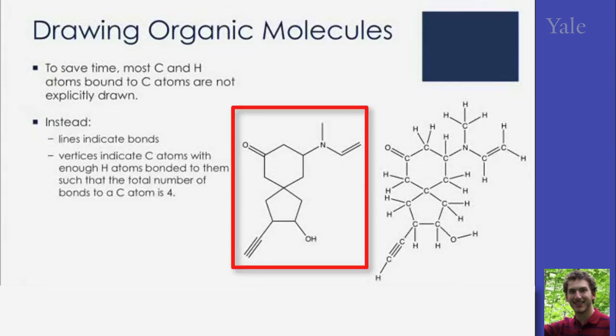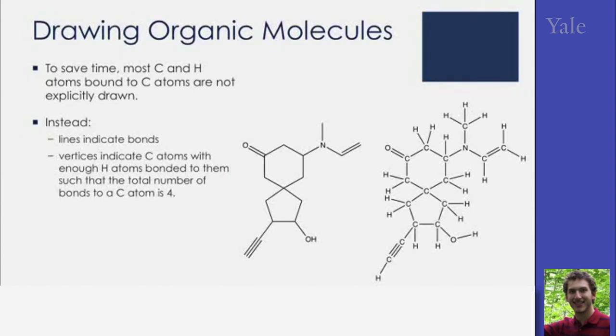So, to save time, we don't explicitly draw any of the carbons or the hydrogens bound to them. Instead, we just draw the bonds between carbon atoms. The carbons themselves are represented by the vertices, the angles between the bonds that are drawn. And we assume that there are as many hydrogens on each of the carbons as is required to bring the total number of bonds to four. For instance, a carbon with three bonds drawn to it explicitly has to have one hydrogen on it. A carbon with only one bond drawn explicitly to it has three hydrogens on it.